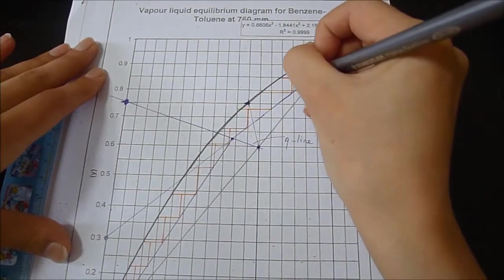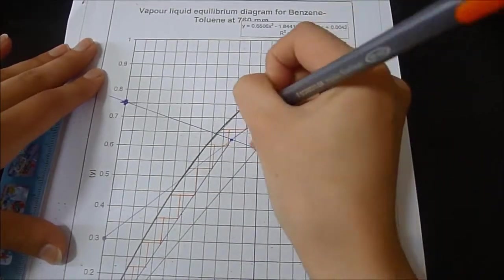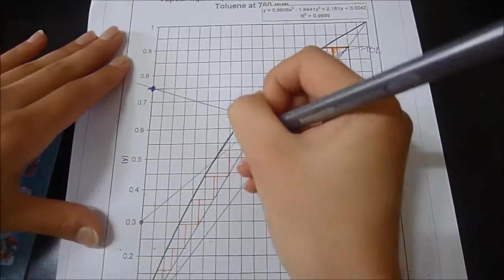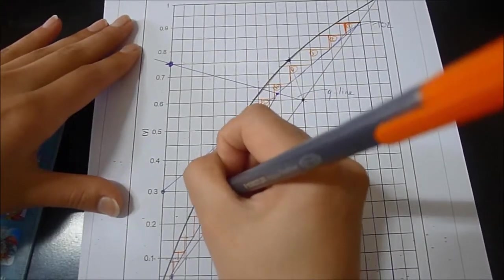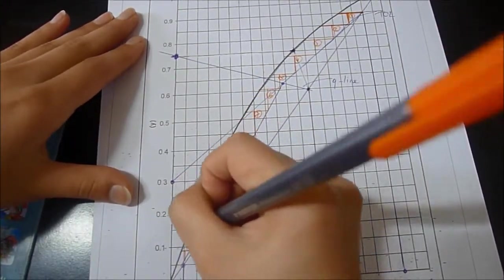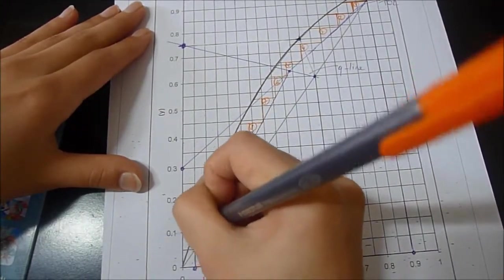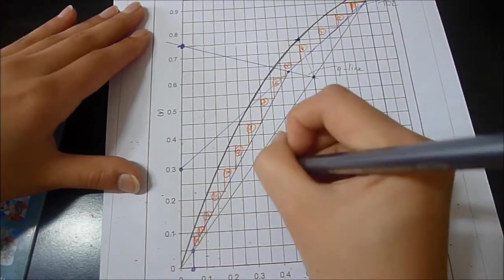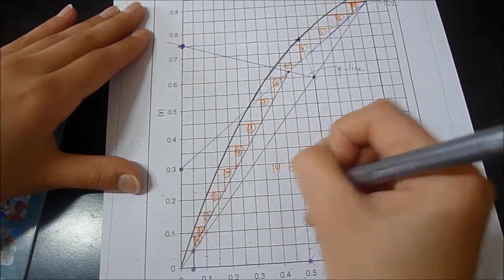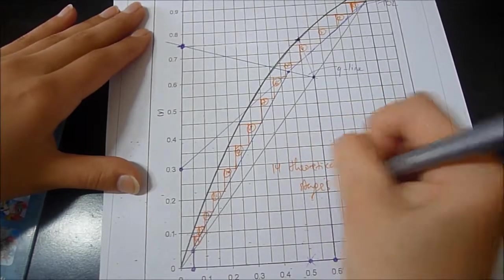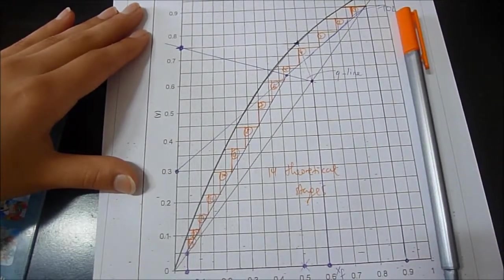Now I have reached XW, so I need to count all the stages. 1, 2, 3, 4, 5, 6, 7, 8, 9, 10, 11, 12, 13, and 14. So that's 14 theoretical stages.